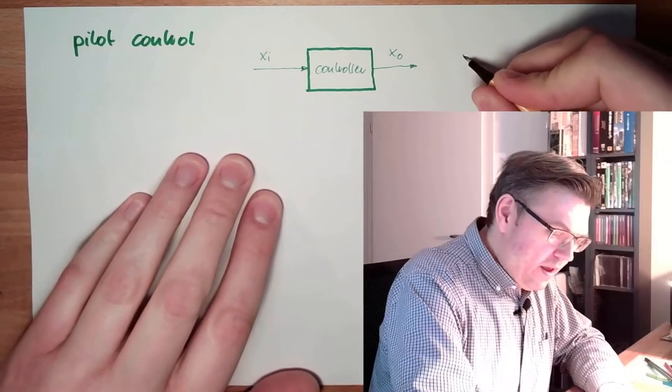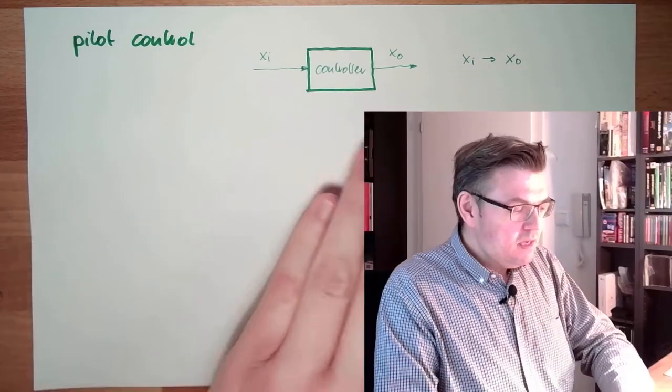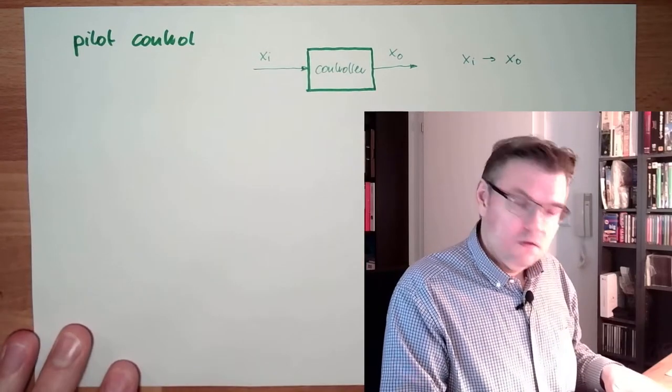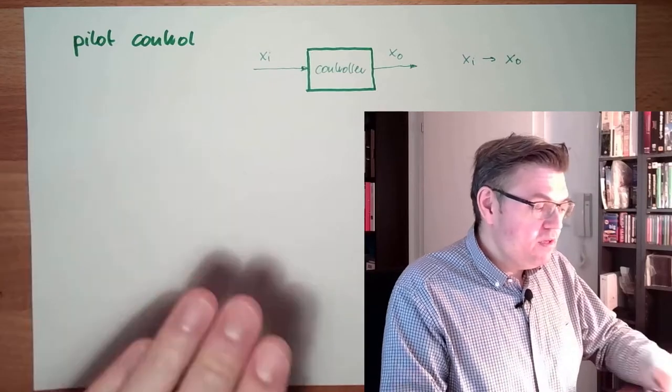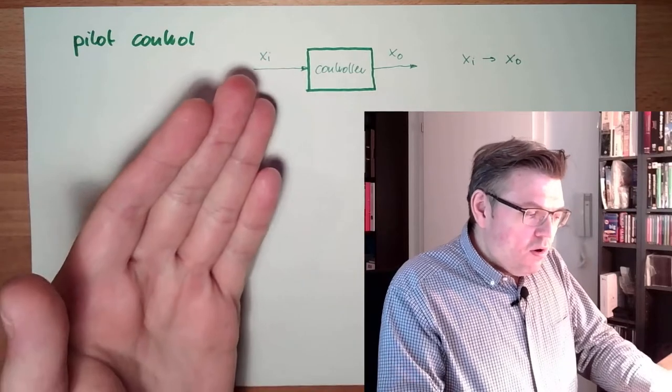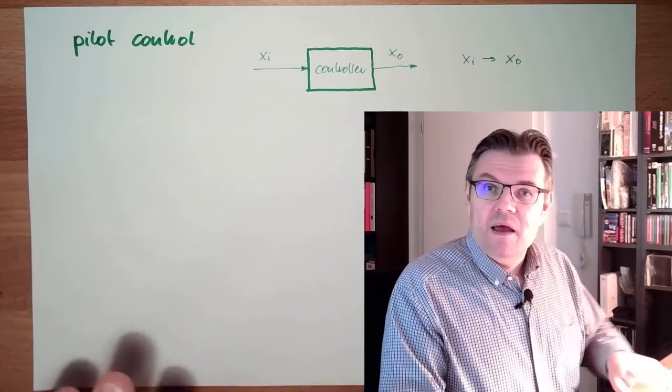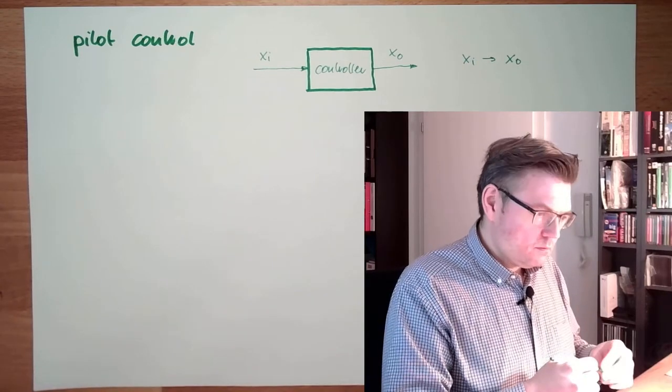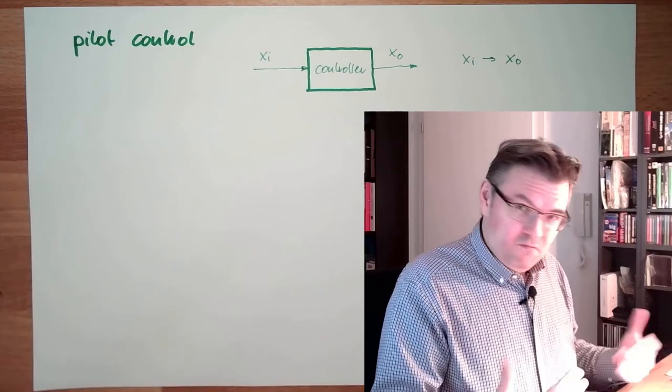So from Xi we go directly to XO. This means if Xi is not here, XO will also disappear. Xi is always necessary for this type of control. They're just transforming or somehow determining what XO should be from Xi. If Xi is gone, nothing. That's the pilot control, simple control.